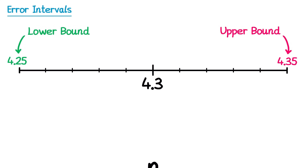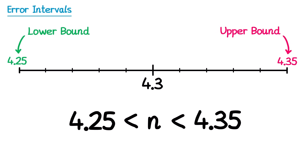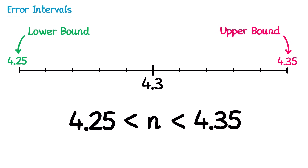We take a letter, for instance n, and we say that n is the set of numbers that round to 4.3, and they are in between 4.25 and 4.35. However, we need to take care to include 4.25 but not include 4.35. To do this, we put a less than or equal to symbol here.